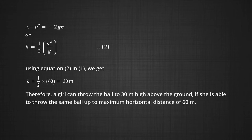This means a girl can throw the ball to 30 m high above the ground if she is able to throw the same ball to a maximum horizontal distance of 60 m.